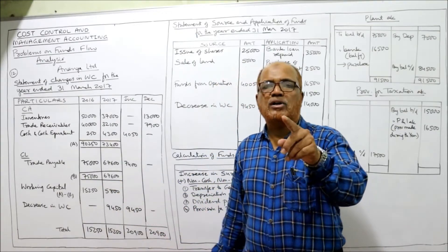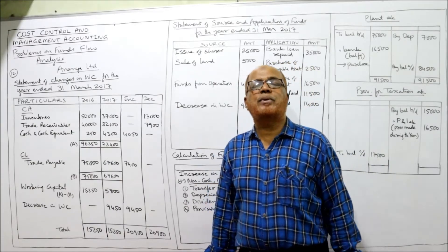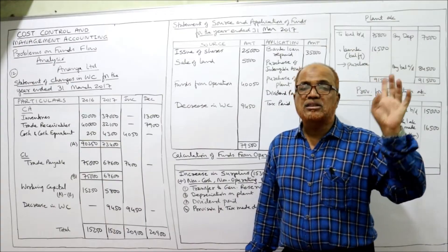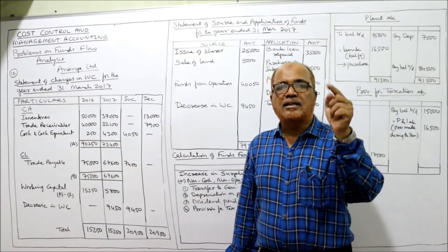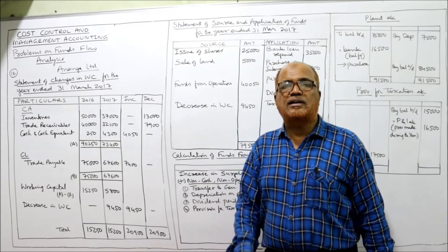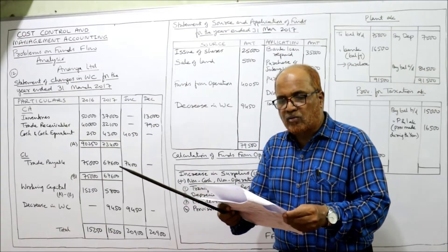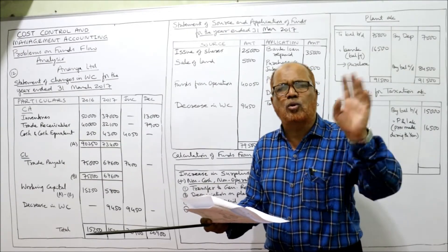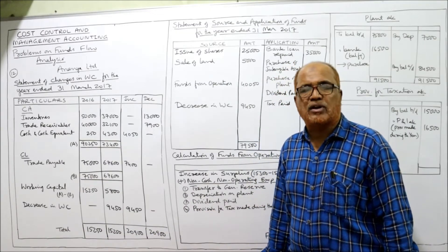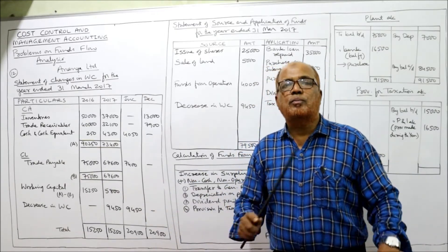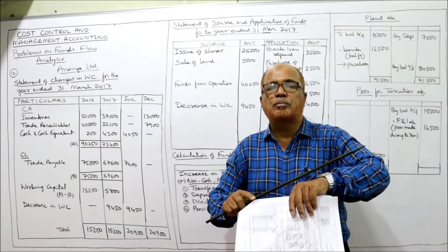Provision for taxation can be treated as a current liability or as an appropriation of profit — I have discussed this in the theory video. There are two methods of treatment of provision for taxation. Method one: treat it as a current liability. If so, take the provision for taxation in the working capital statement for both last year and current year, and ignore whatever adjustment is given regarding taxation — no need to prepare the provision for taxation account.